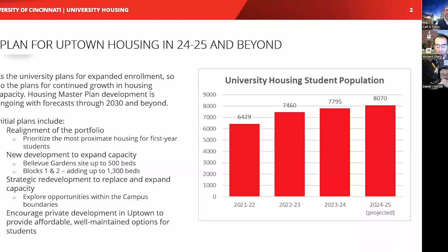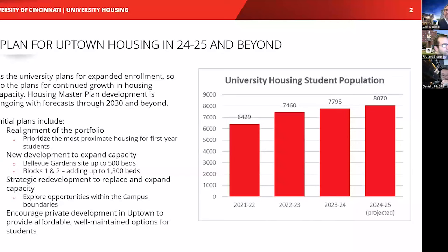We're doing this in a methodical way with four key priorities. One is prioritizing the most proximate housing in a deliberate and intentional way for our first-year students — that's the base of our program. First-year students come to housing, establish themselves, and then make decisions from there. That's always been north of 60 to 70% of our housing program. What's changed in recent years is a desire of upperclassmen to stay on campus longer.